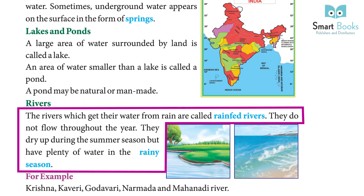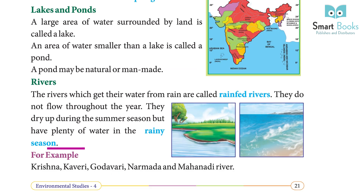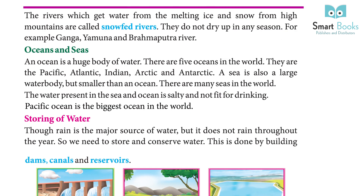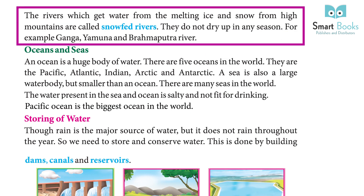Rivers: The rivers which get their water from rain are called rain-fed rivers. They do not flow throughout the year — they dry up during the summer season but have plenty of water in the rainy season. For example: Krishna, Kaveri, Godavari, Narmada, and Mahanadi rivers.